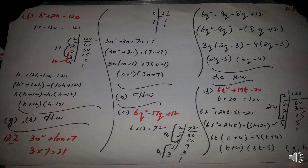Question 2, part a: 3n² + 10n + 7. The coefficient of the highest power n² is 3, multiplied by the last number 7 gives 21. Taking the LCM of 21: 3 and 7. We split 10 into 3n and 7n, both smaller than 10 with the same sign. First and second in one bracket, third and fourth in the other. Taking 3n common from the first bracket and 7 from the second, the factors are (n + 1)(3n + 7). Part b is your homework.